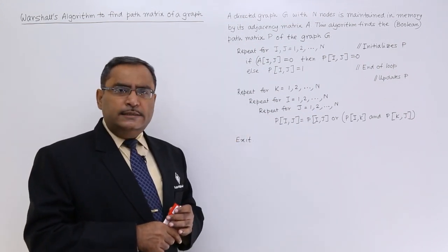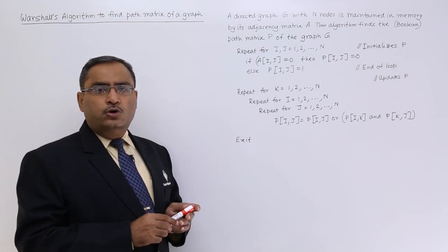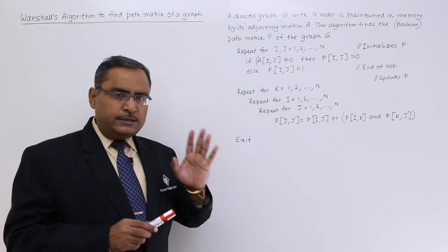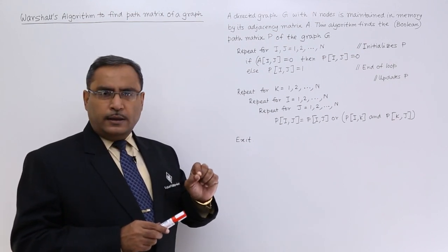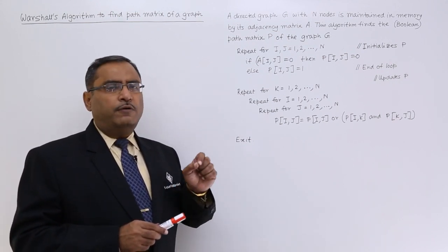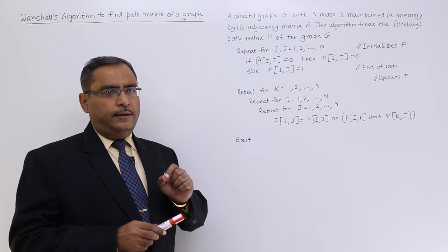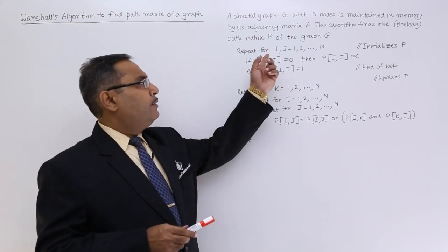Repeat for i and j from 1 to n. This particular statement means, very simple: for i equals 1 to n and within that particular loop for j equals 1 to n. Otherwise, in algorithm, we can write it in this way.